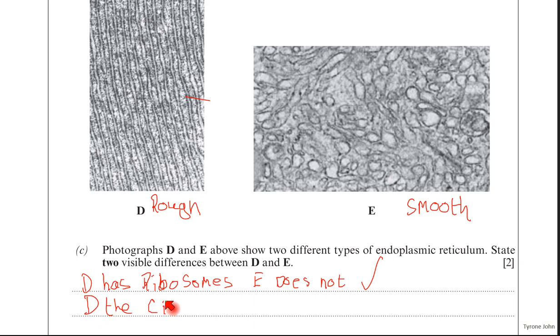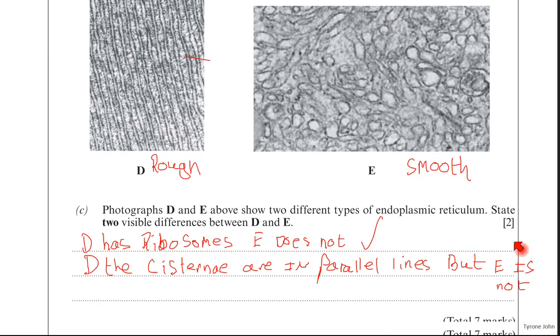So the next one there was to talk about the cisternae. So in D, you should have said the cisternae are in parallel lines. But E is not. So that would have been another acceptable answer there in terms of looking at the structures.